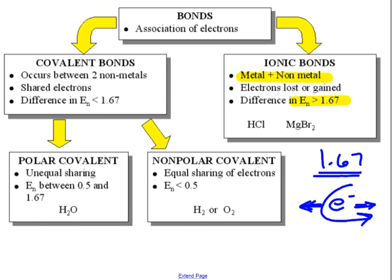Covalent bonds happen when we have two non-metals. This is because their electronegativity difference is less than 1.67. So they end up having a sharing of electrons. Now, not all sharing is equal. When the sharing is unequal, when the electron is closer to one atom than the other, we call that polar covalent. When the sharing of the electrons is equal and the electron is essentially in the middle of the two atoms, we call this non-polar covalent. We know that a covalently bonded molecule will be polar if the difference in their electronegativities ends up being between 0.5 and 1.67. If the difference is less than 0.5, it is non-polar.